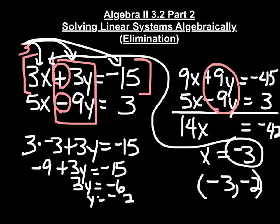That means our solution is negative 3, negative 2. That is where the two lines would intersect.